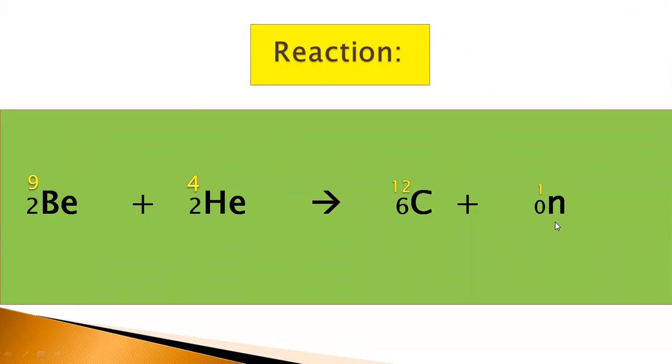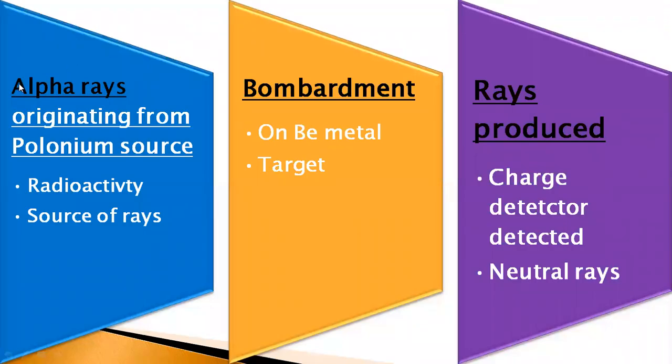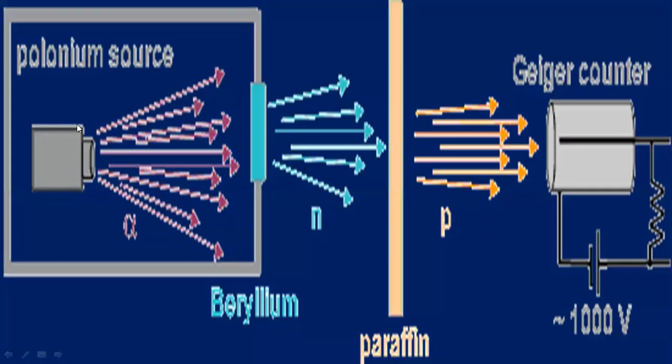What happened actually? Alpha rays are coming, they are originating from polonium source. Why they are originating from polonium source? Actually polonium is a radioactive element, it means it is the source of rays. So alpha rays are originating or emerging from polonium and bombardment takes place on beryllium metal. So beryllium metal is the target while polonium is the source. After rearrangement, rays are produced and a charge detector detected that these rays which are produced are neutral rays.